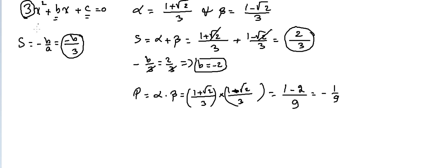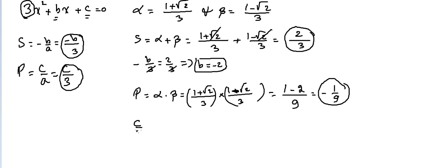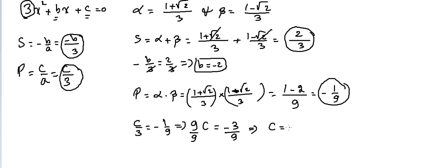In the quadratic equation the product of the roots equals C over A. With A equal to 3, we have C over 3 equals minus 1 over 9. Cross-multiplying gives 9C equals minus 3, so C equals minus 3 over 9, which simplifies to minus 1 over 3. We have found both B and C.